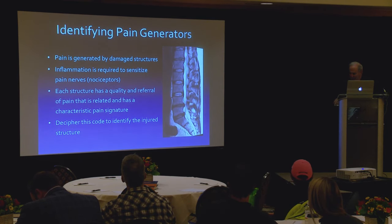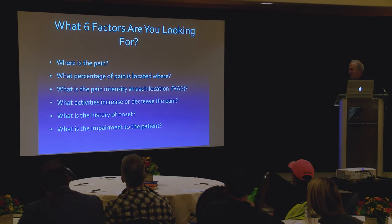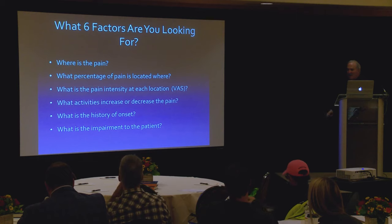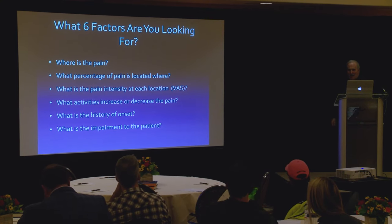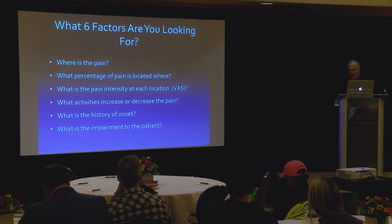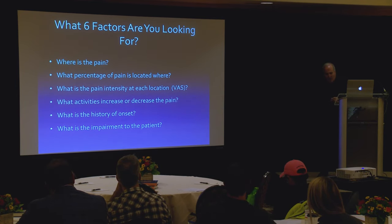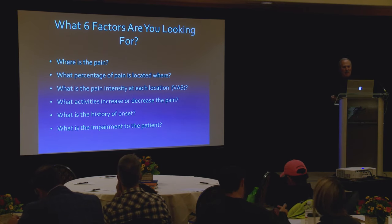There are six factors to ask questions about. First: where is the pain? Sounds simple, but many patients won't tell you the right answer. Where's the pain? Oh, it's in my hip. Where's your hip? They point right into their SI joint and buttocks. So you can't expect a verbal description — you have to be demonstrative.